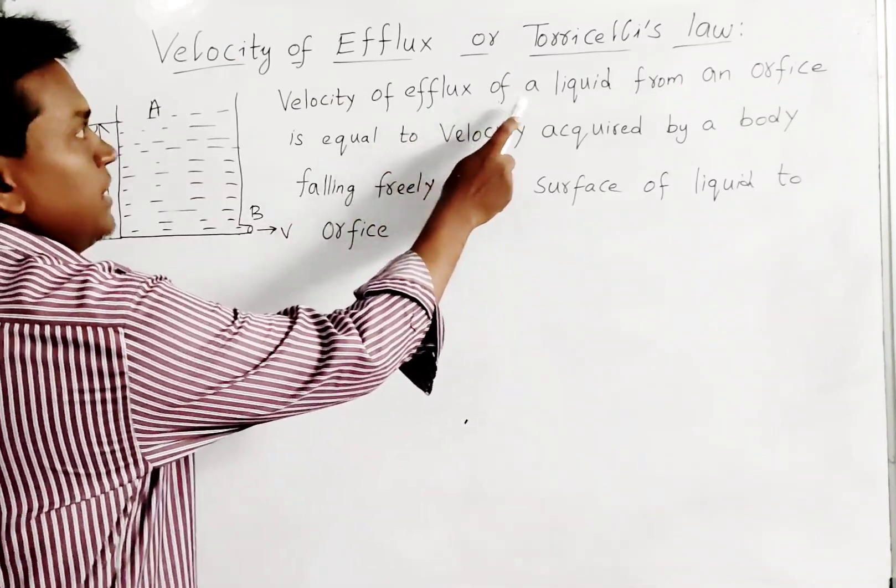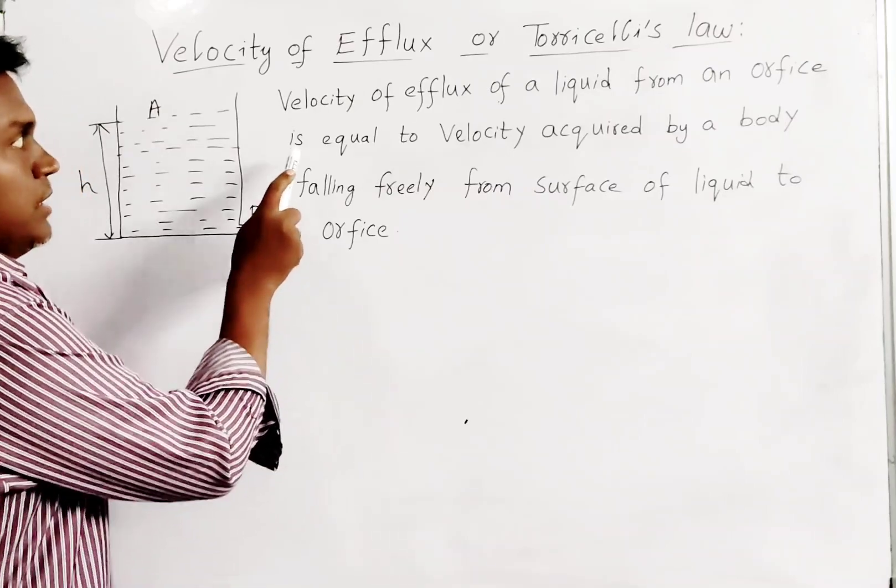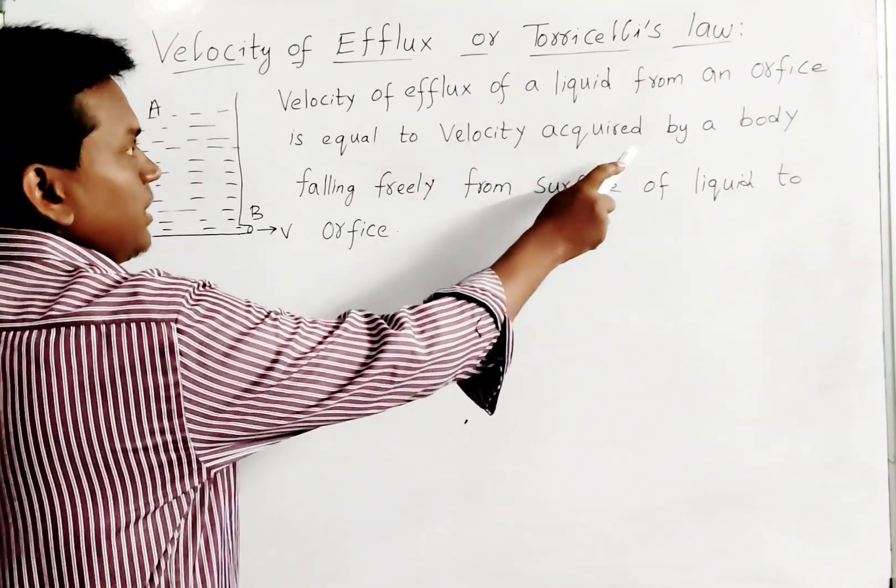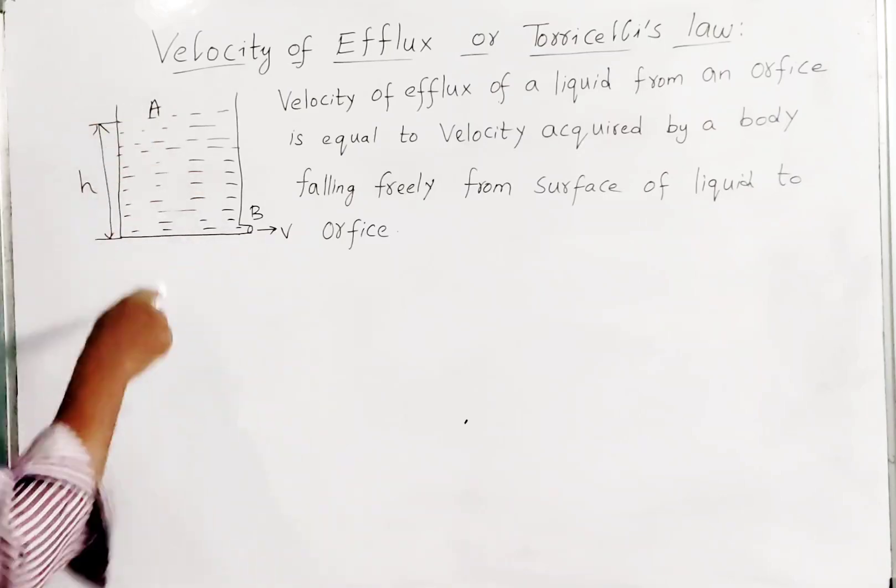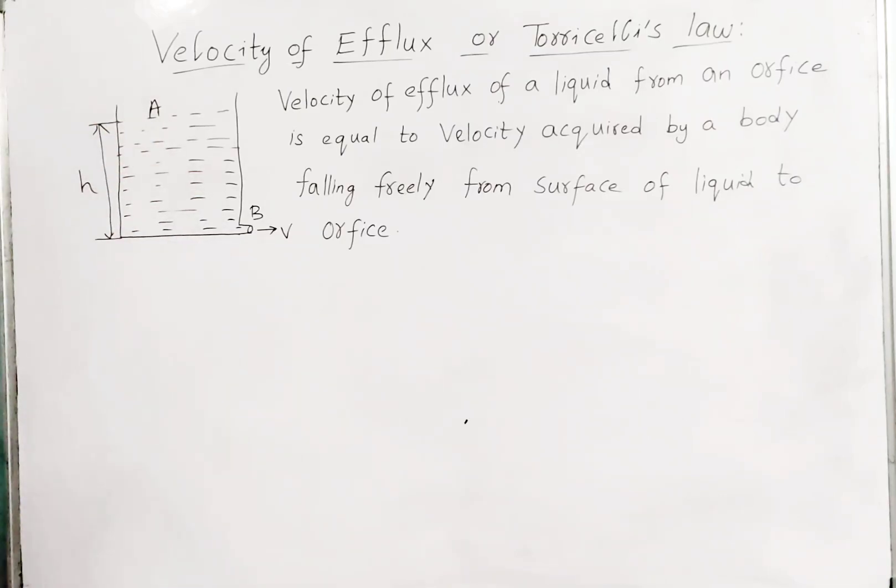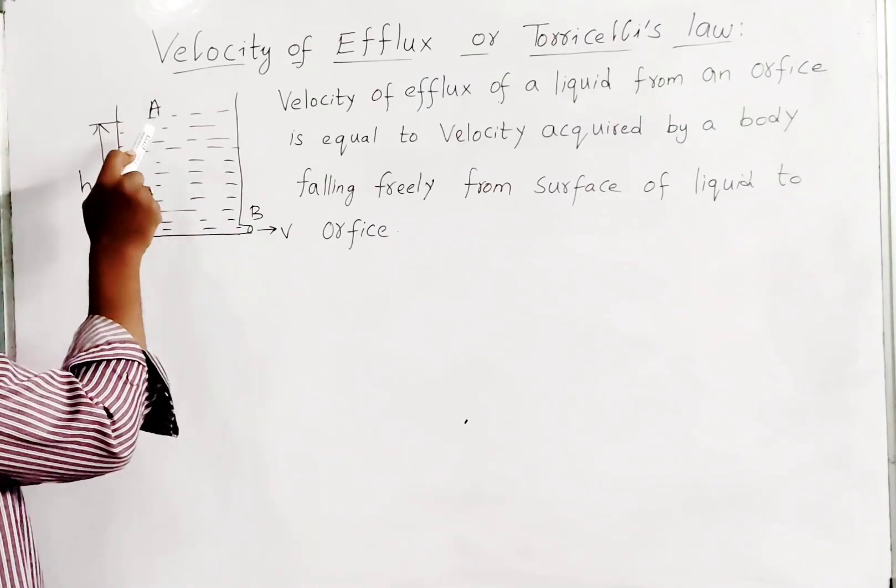From the hole is equal to the velocity acquired by a body falling freely. The body will fall freely from the surface of liquid to the orifice, that means from the top surface to this orifice.